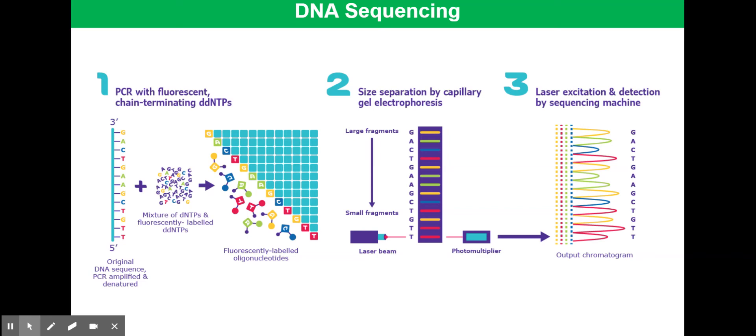In 1981, Sanger published his sequencing of the human mitochondrial genome consisting of 37 genes and 16,569 base pairs.